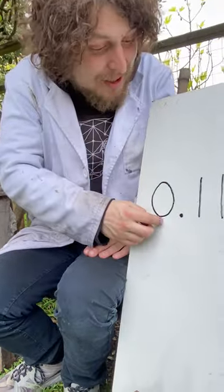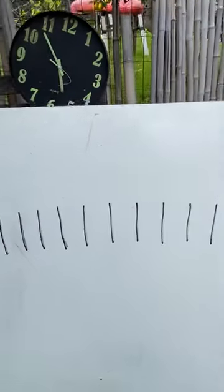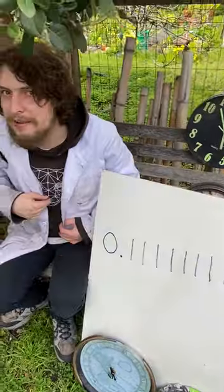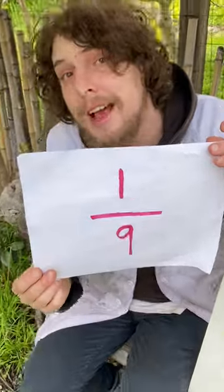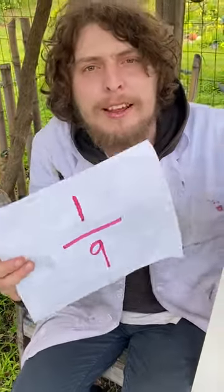This string of digits, zero point infinite ones, is very interesting. In our base 10 way of counting numbers, it's the decimal representation of the fraction one-ninth. But it would mean a different thing if we counted in a different base.